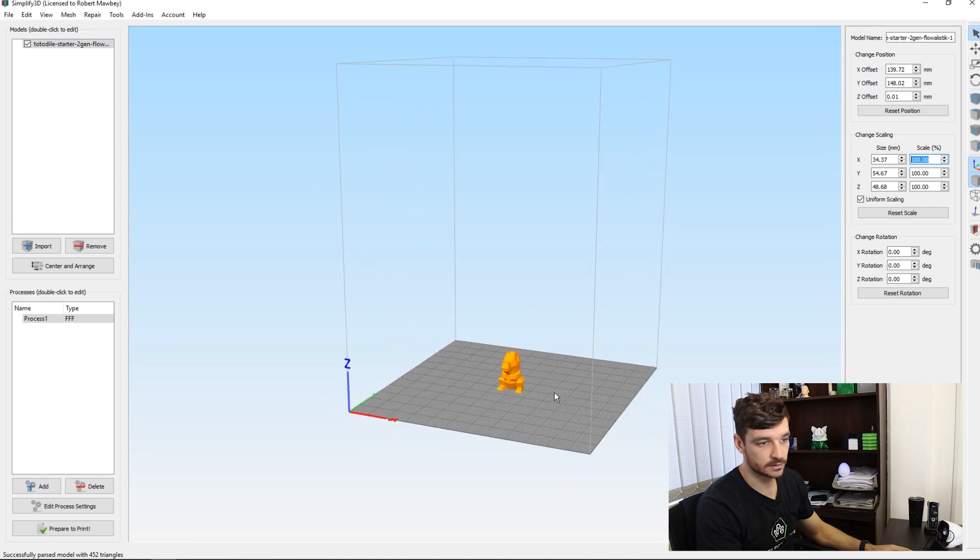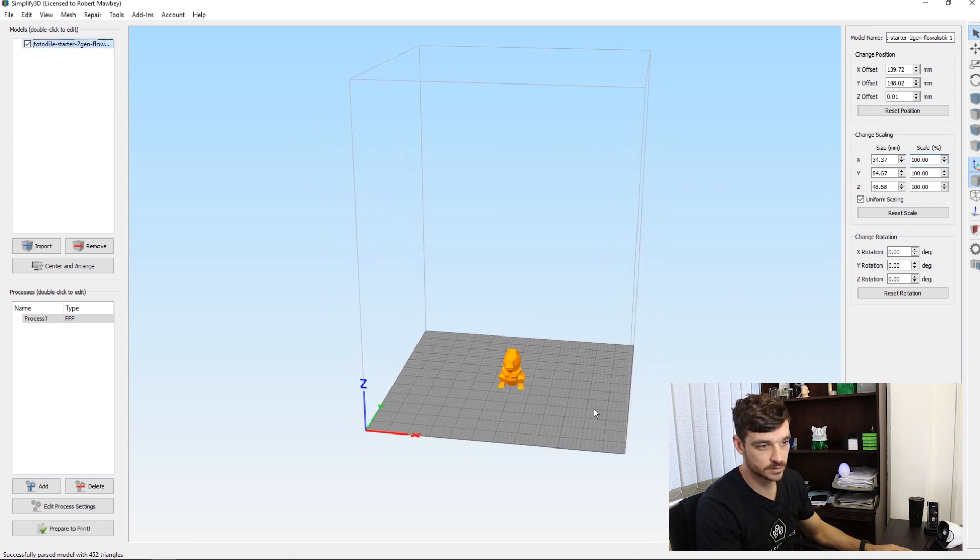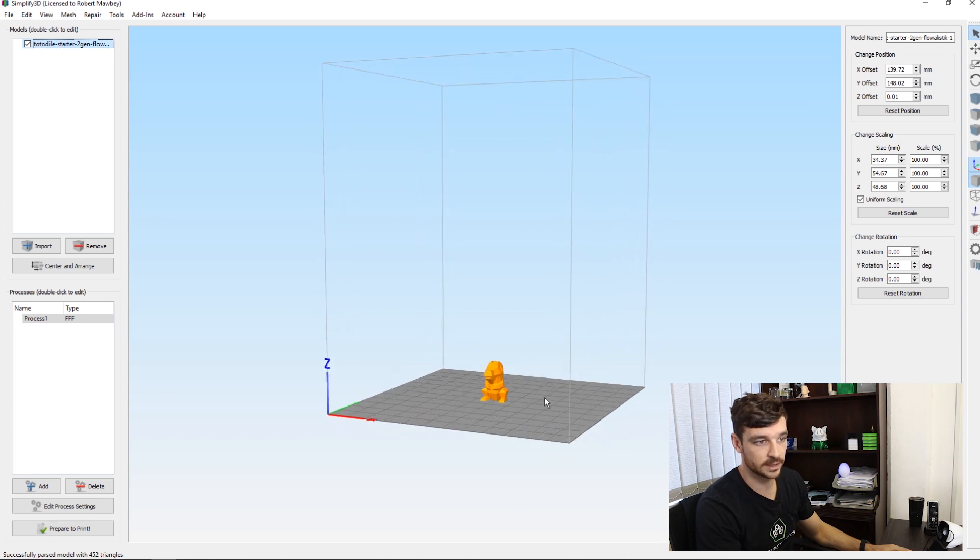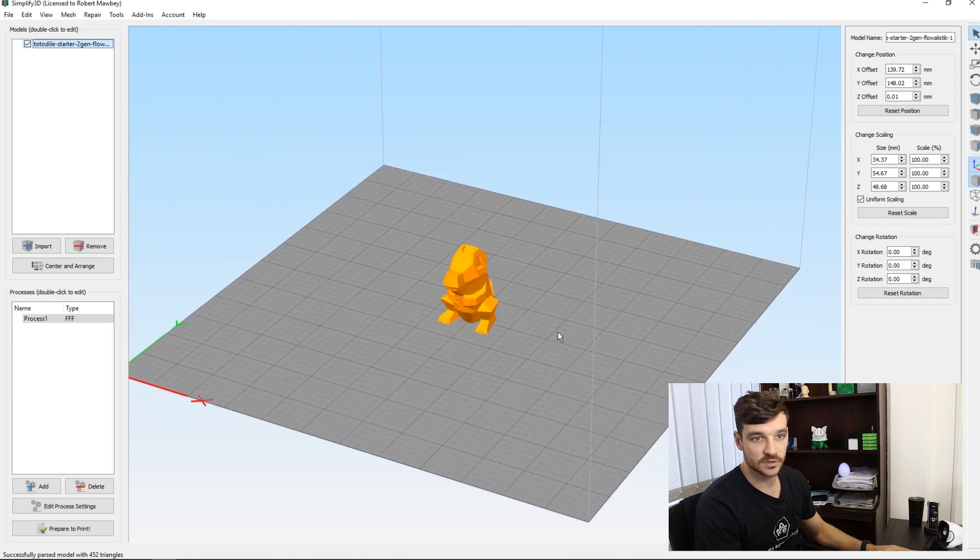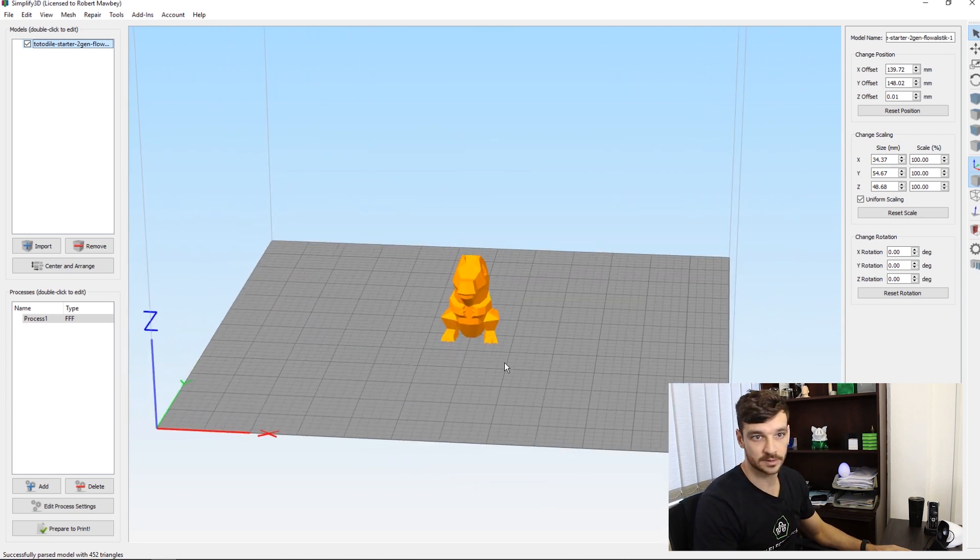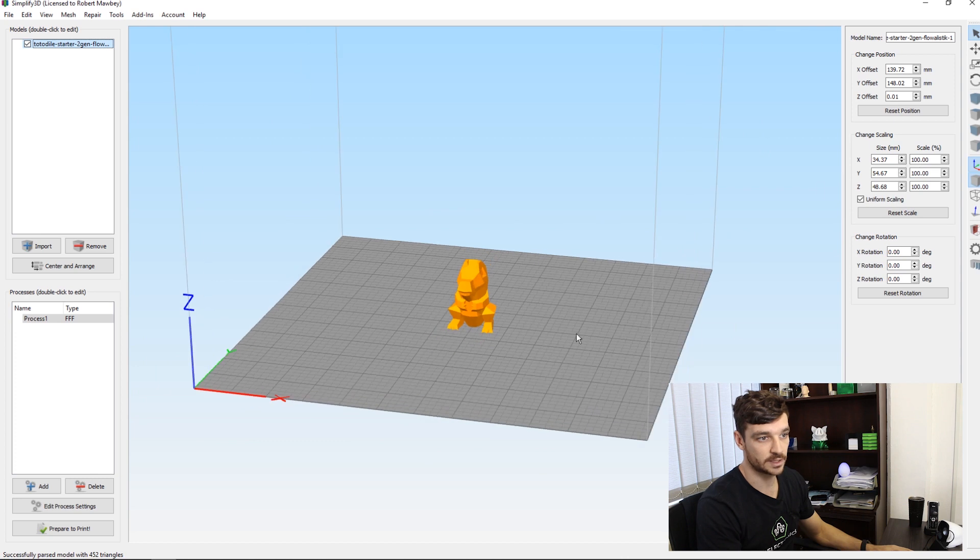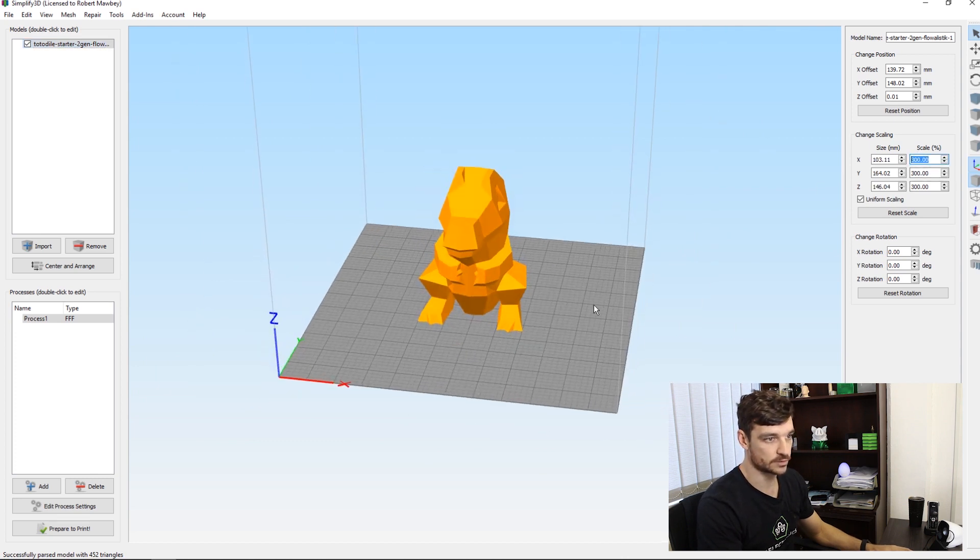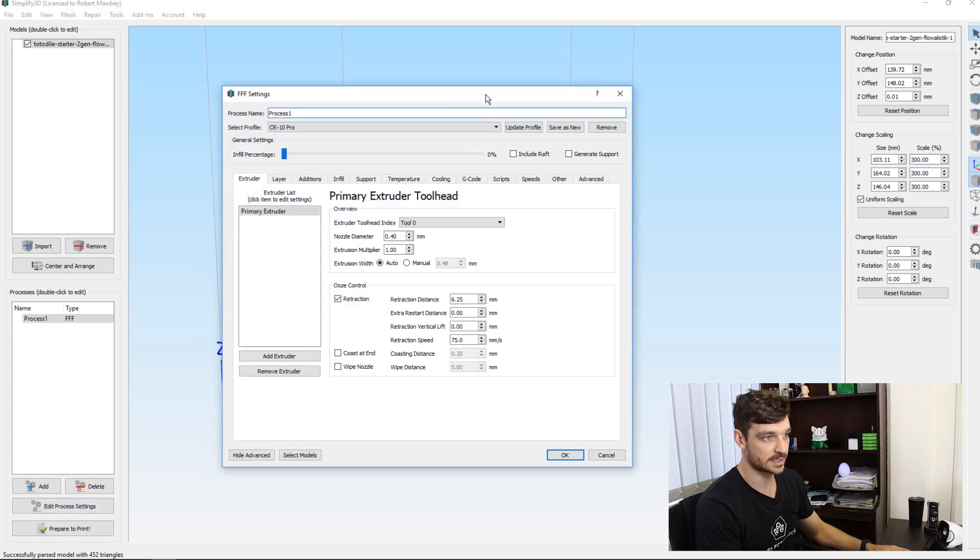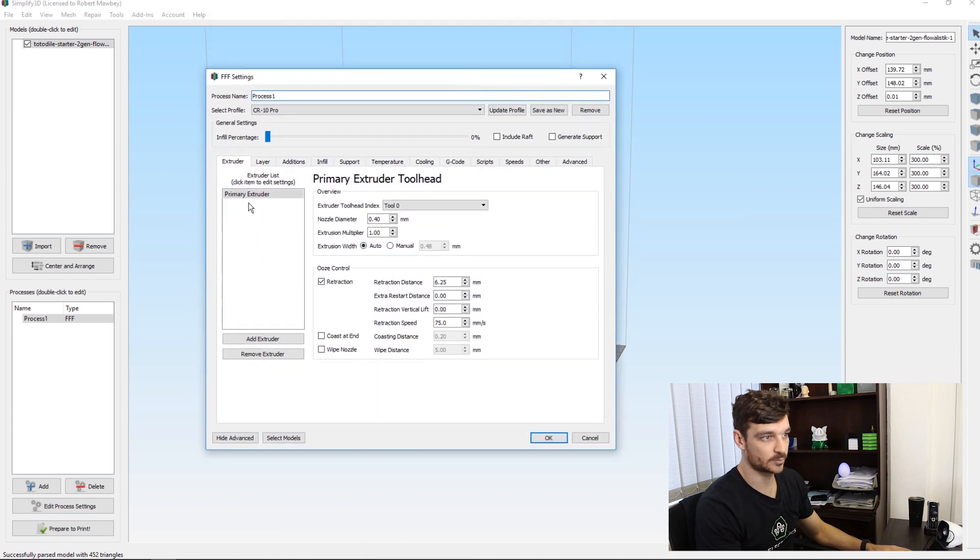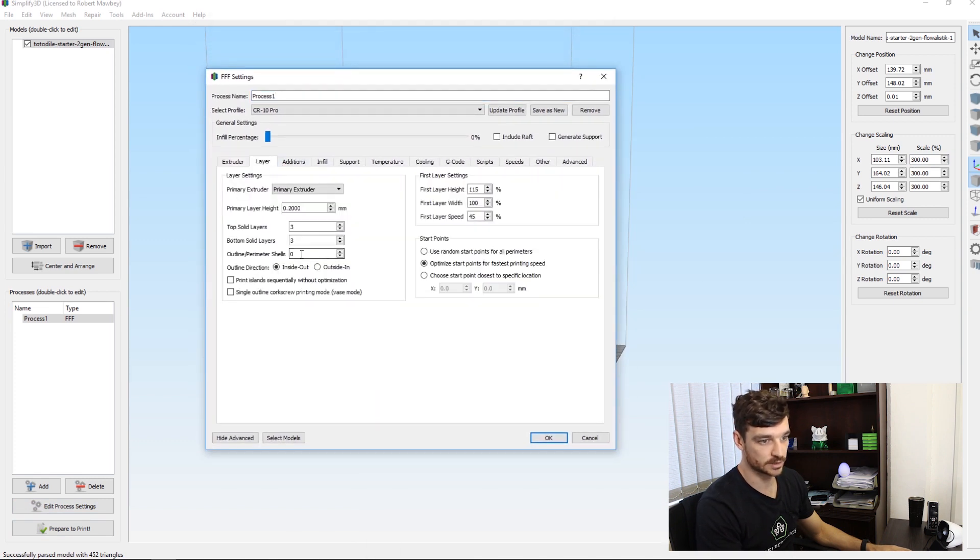Okay, so I have the Totodile model. I got this off Thingiverse. We'll leave a link in the description in case someone wants to print it themselves. For cinematic purposes, we're going to scale this up by 300%, nice big model. We're going to be focusing on two settings for this video besides my usual slicer settings: outline perimeter shells and infill percentage.